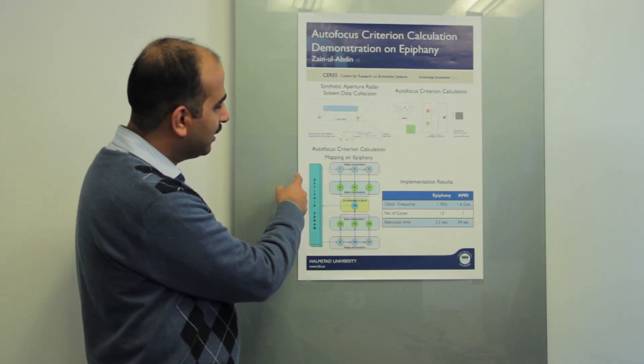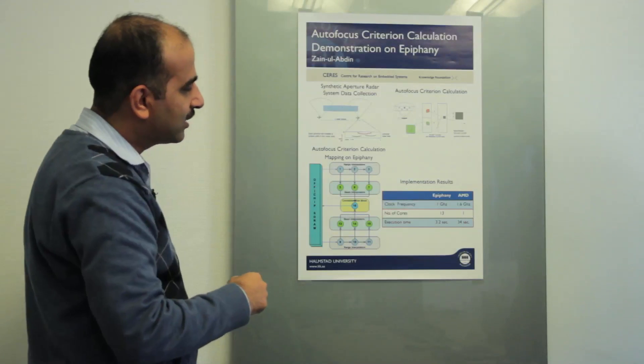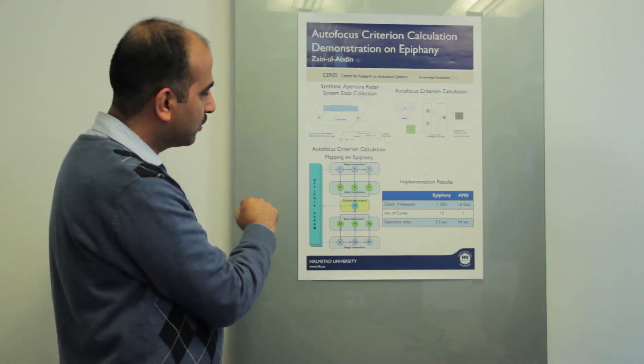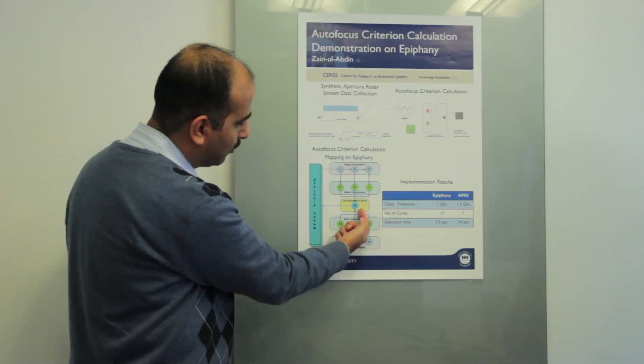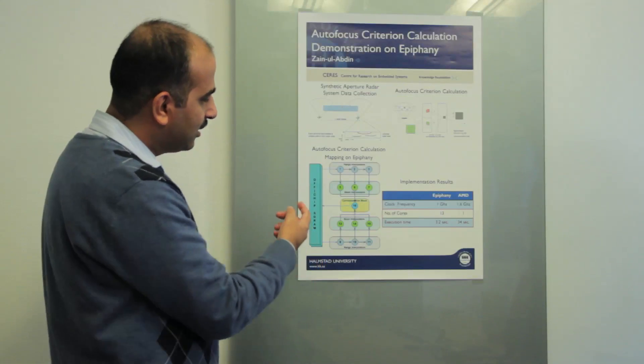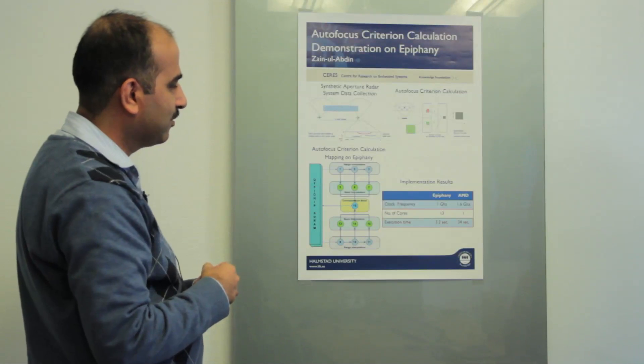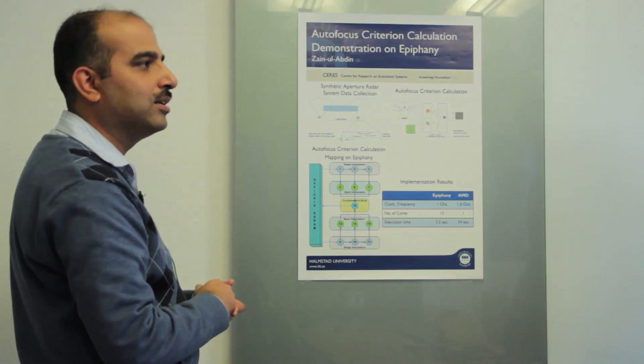What is done here is that we have mapped this autofocus criterion calculation over the Epiphany architecture by using 13 cores out of the 16 cores. The first block here corresponds to the autofocus criterion for the first image, and the bottom block is for the second image. This center block is computing the summation for the correlation, and then finally it sends back the results to the off-chip SDRAM.